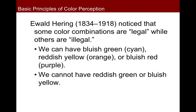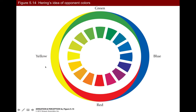Ewald Hering is famous for having noticed that you can have some color combinations but not others. You can combine blue and green — that leads to cyan. You can have a reddish yellow (orange) or a bluish red (purple), but you can't have a reddish green and you can't have a bluish yellow. Looking around this color wheel, orange is some combination of red and yellow, and some greens are a combination of blue and green, but nothing is a combination of blue and yellow, and nothing is a combination of red and green.